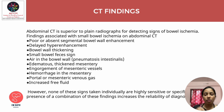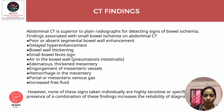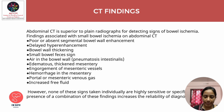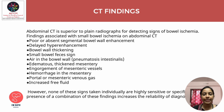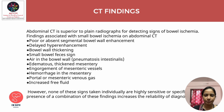CT is superior to plain radiography for detecting signs of bowel ischemia. CT findings include poor or absent segmental bowel wall enhancement, delayed hyper-enhancement, bowel wall thickening, small bowel feces sign, air in the bowel wall, edematous and thickened mesentery, engorged mesenteric vessels, hemorrhage, portal or mesenteric venous gas, and increased free fluid. Individually these signs are sensitive but not specific; a combination increases diagnostic reliability.